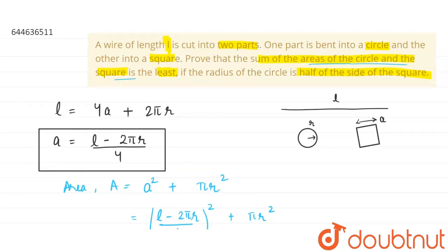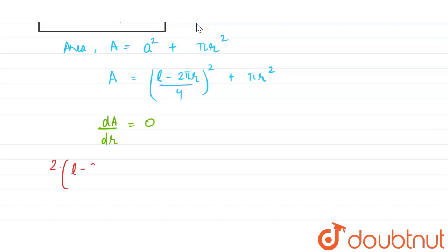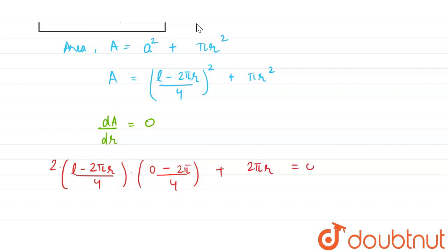To minimize the total area, we set dA/dr = 0. Differentiating A with respect to r using the chain rule: 2 · [(L − 2πr) / 4] · (−2π / 4) + 2πr = 0.